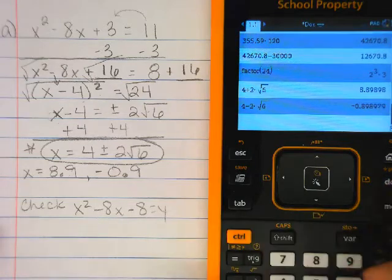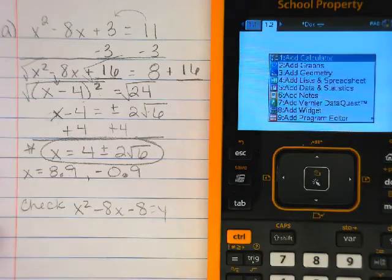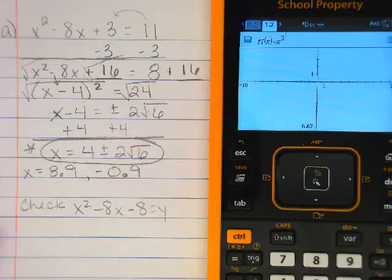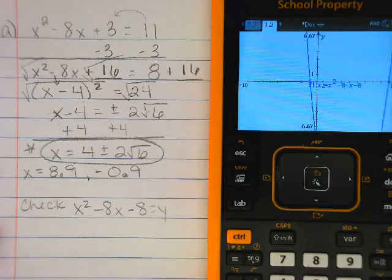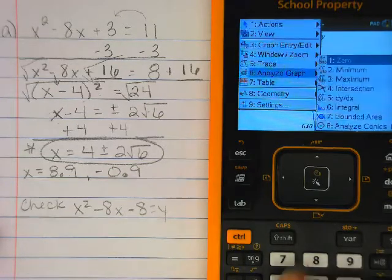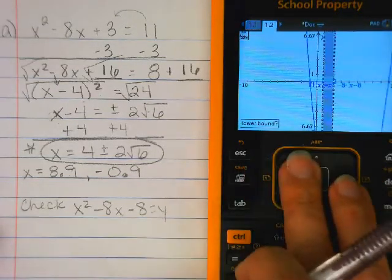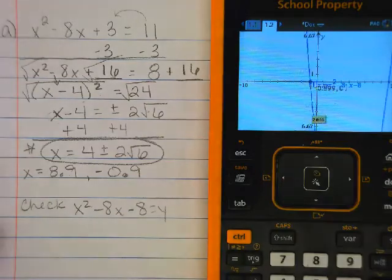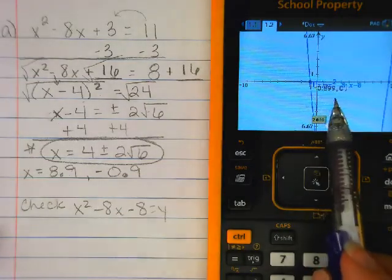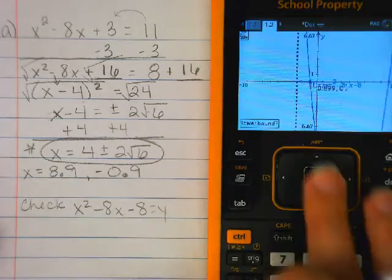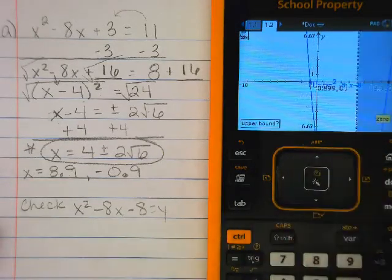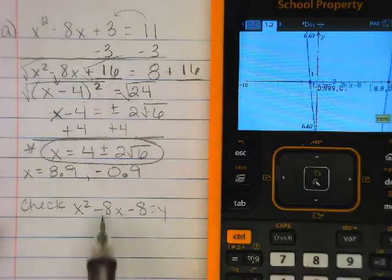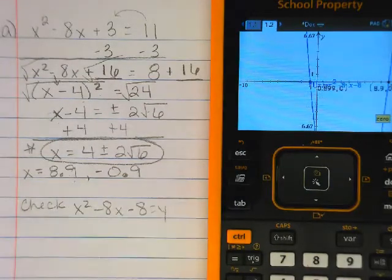So I could go to my graph and I can say X squared minus 8X minus 8. Very ugly. But I could do my menu 6.1 to check my work. There is my negative 0.8999. I can come over here. So you can still use those strategies and you get positive 8.9. And in your head, you're like, then Mrs. Ray, why are we completing the square?